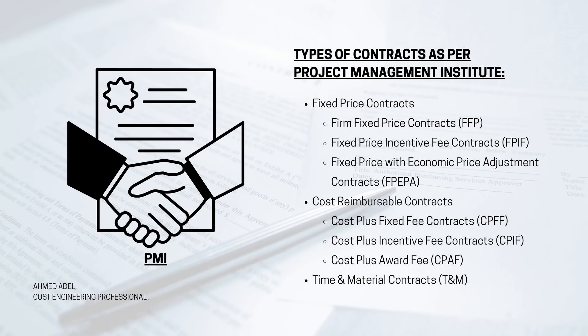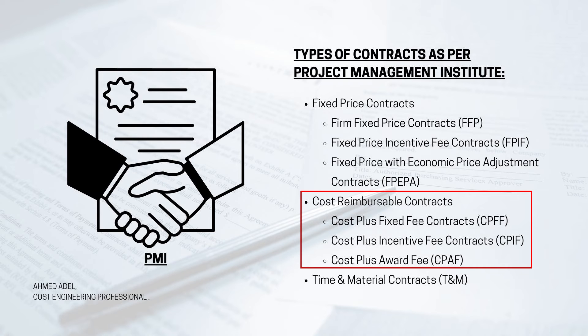Under cost reimbursable contracts, PMI identifies Cost Plus Fixed Fee (CPFF), Cost Plus Incentive Fee (CPIF), and Cost Plus Award Fee (CPAF). In Cost Plus Fixed Fee, the contractor calculates direct and indirect cost, and a fixed fee — either a fixed amount like 100,000 or a fixed percentage like 10% — is added on top. The fee is fixed regardless of the actual costs incurred.